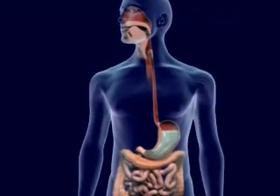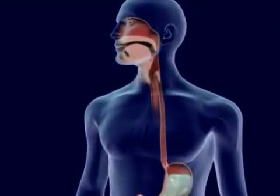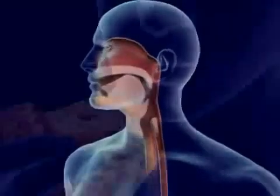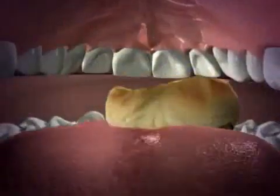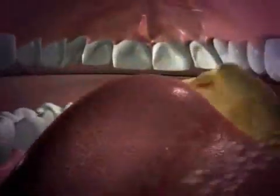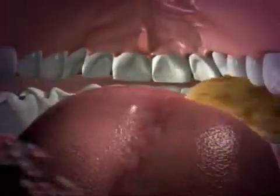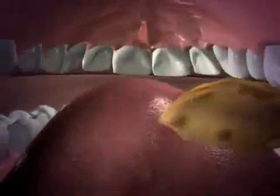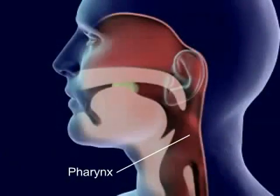In digestion, food is changed by the organs into a soluble form to be absorbed by the body. Food in the mouth is mixed with saliva. Saliva begins to dissolve the food as the teeth grind and cut it. Food is forced back into the throat, pharynx, by the tongue.